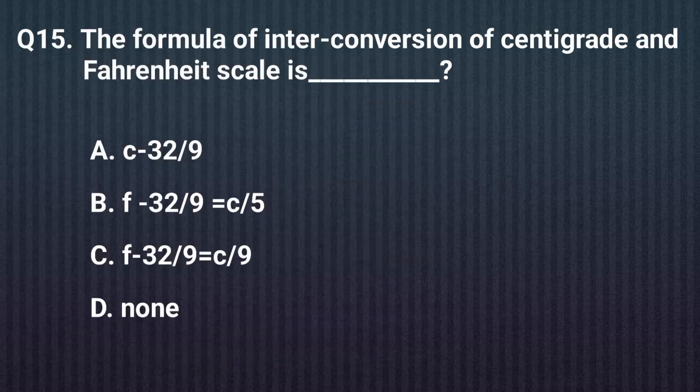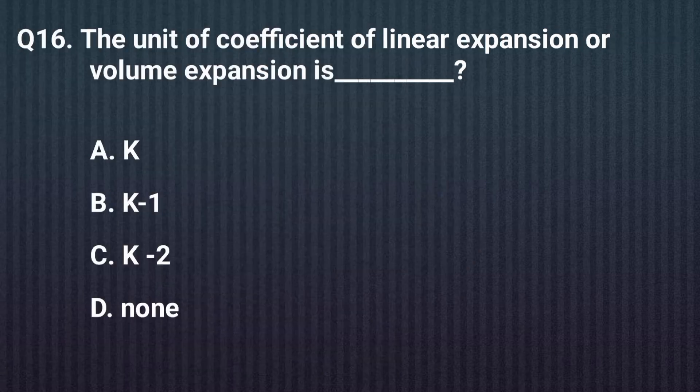Question fifteen. The formula for conversion between centigrade and Fahrenheit scale is — the right answer is option B: (F − 32) / 9 = C / 5. Question sixteen. The unit of coefficient of linear expansion or volume expansion is — the right answer is option B: K⁻¹.